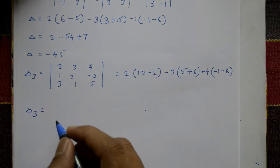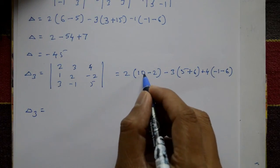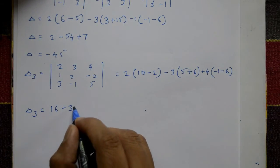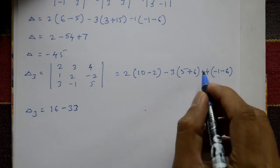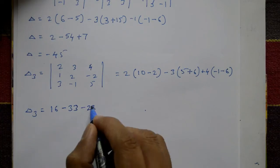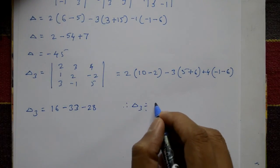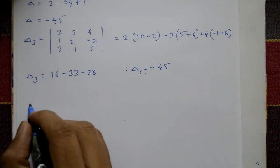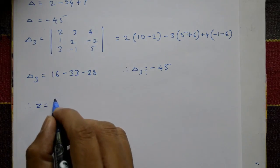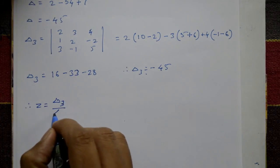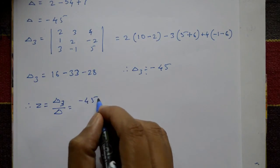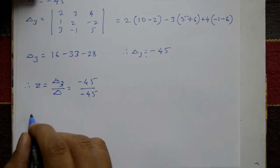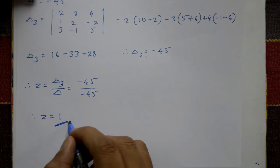Delta 3 equals: 8 into 2 is 16, then 11 into minus 3 is minus 33, minus 7 plus 24 is minus 28. Therefore Delta 3 is equal to minus 45. Now z equals Delta 3 divided by Delta. Delta 3 is minus 45 and Delta is also minus 45, so minus 45 divided by minus 45 cancels. Therefore z is equal to 1.